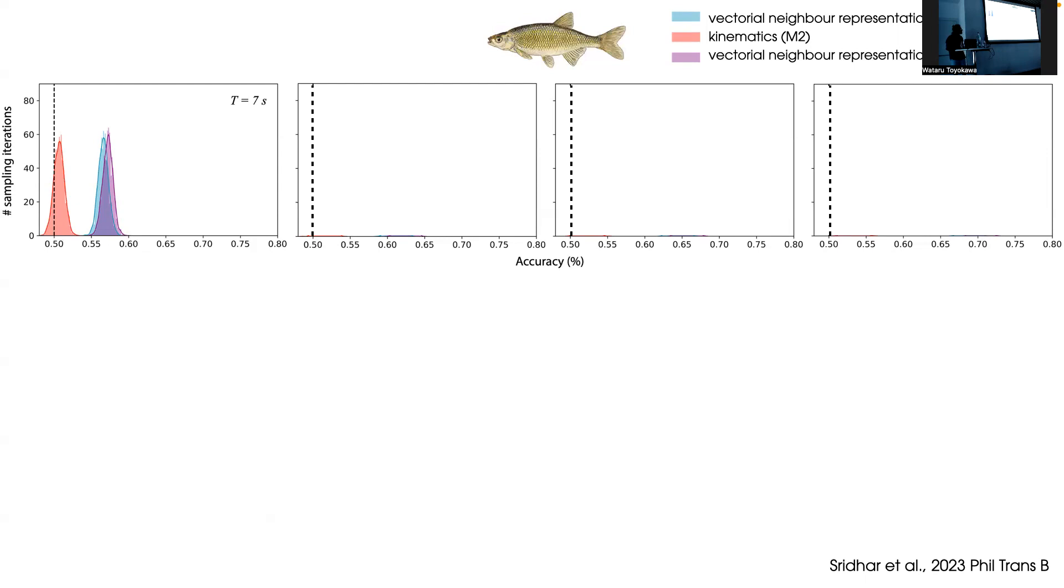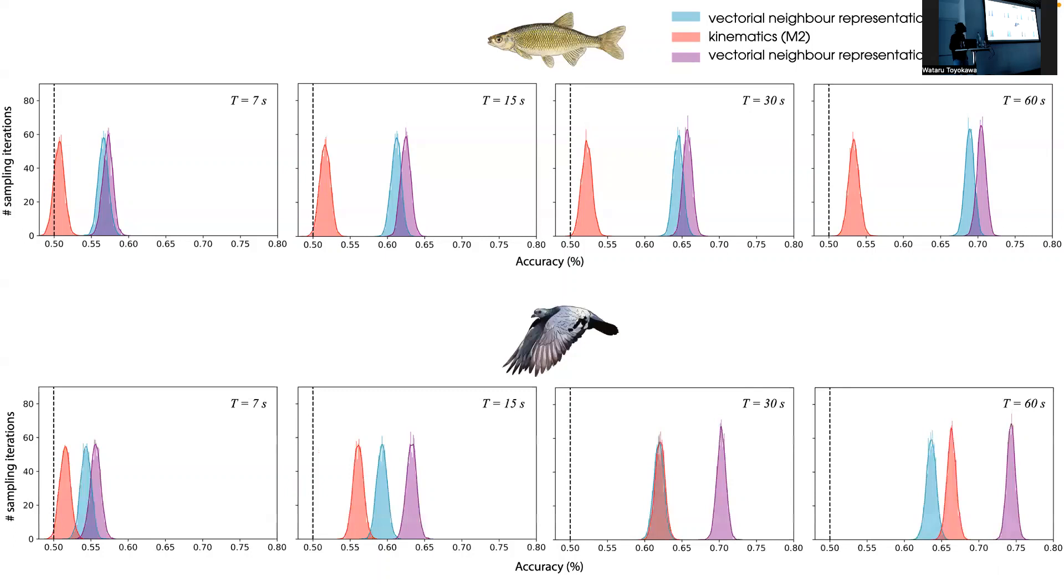When we look at higher time scales, however, both kinematics and relative position of the neighbor become predictive. We did the exact same analysis with pigeons—GPS tracks of pigeons flying in flocks. Broadly speaking, we find the exact same patterns, except when you go to higher time scales, you find that kinematics become more predictive of leadership than the vectorial representation.